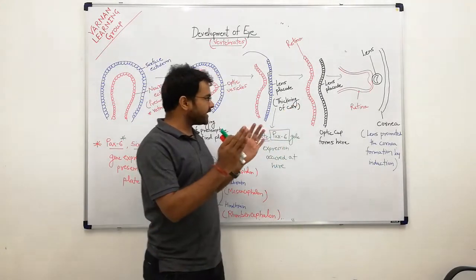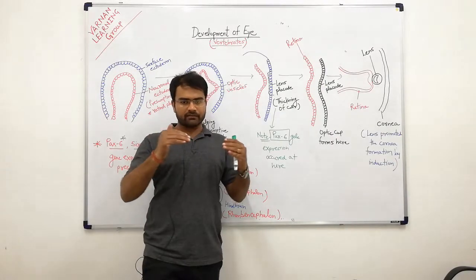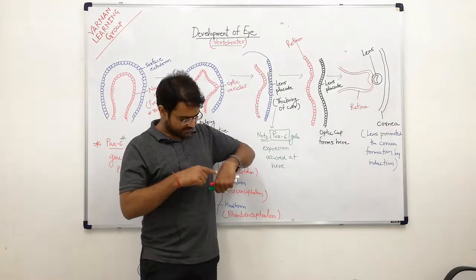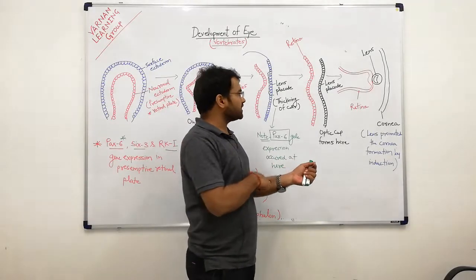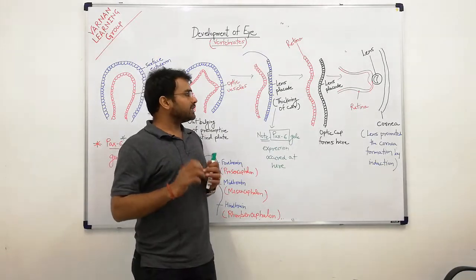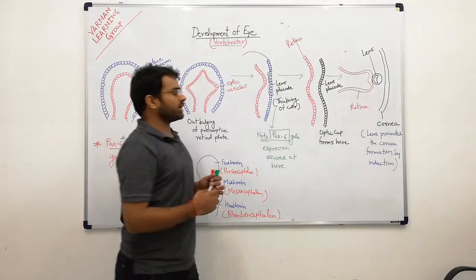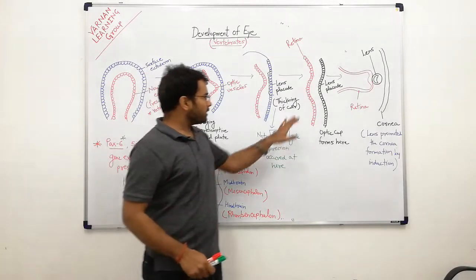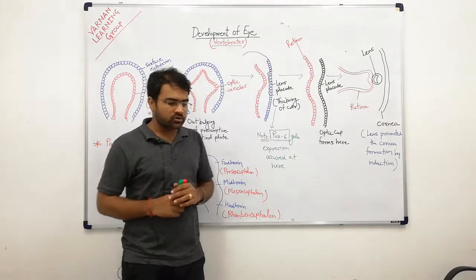PAX6 gene expression in the head ectoderm is induced where the optic vesicle touches it, and the lens placode begins to form. Due to PAX6, thickening of cells occurs — the cells become thicker — and the out-bulging is removed as the lens placode invaginates inward. Invagination means pressing inward, like pressing a ball from the outside. At the same time as this inward pushing, retina formation also begins.